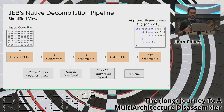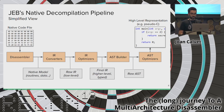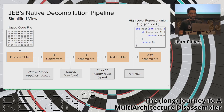Let's place the topic of this talk within the context of the JEB native decompilation pipeline. Here we are not talking about Android decompilation but about native decompilation. There is a simplified view of the pipeline: the input is a file with native code — for example a Windows PE file with x86 code, an ELF library with MIPS code, or a firmware dump with ARM code. The first step is to disassemble the file to produce what we call the native model, which contains routines and data and is an assembly-language-based view. Each routine from this model gets converted to a custom intermediate representation, which is then optimized to provide a high-level IR with types. Finally the IR CFG is structured to obtain an abstract syntax tree, which is beautified to obtain the final high-level representation.